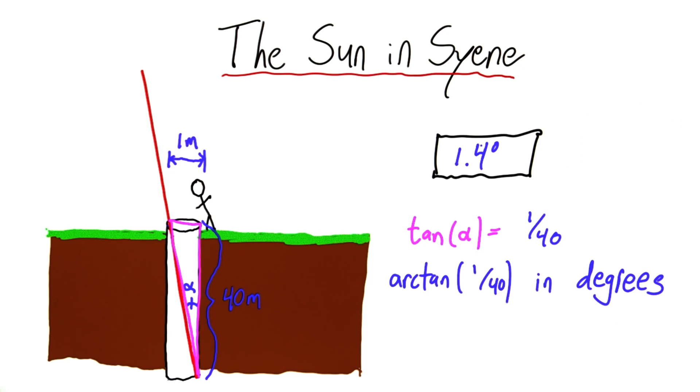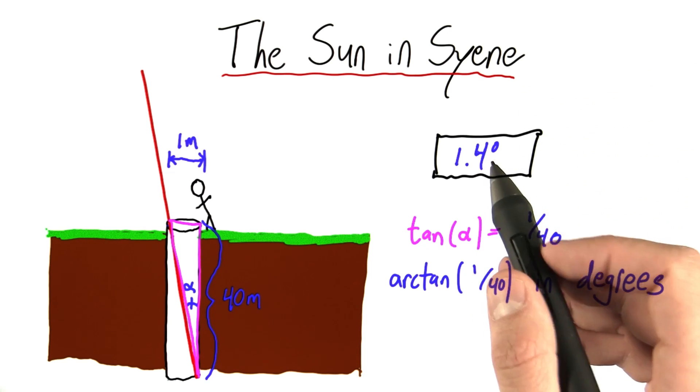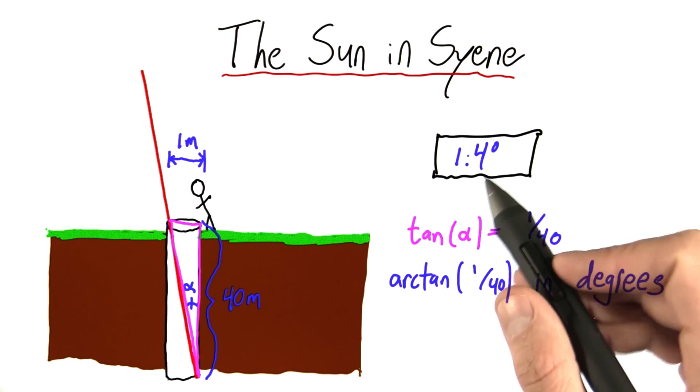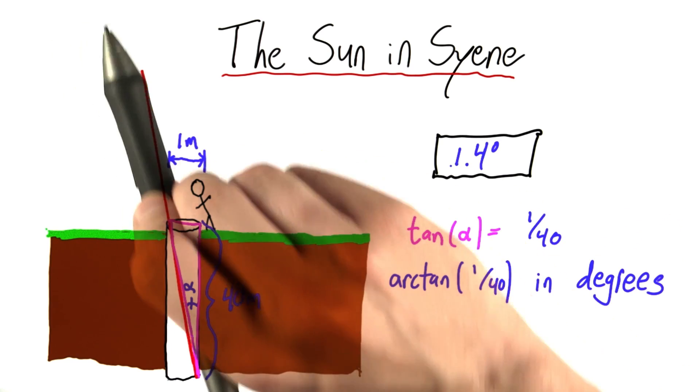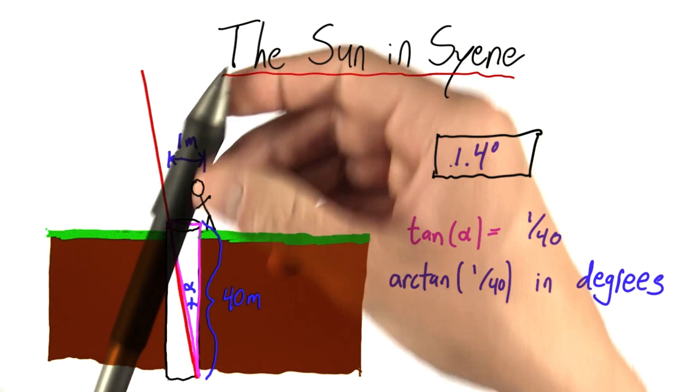So, this points to some error in the measurement. It looks like we could have been off by as much as 1.4 degrees in either direction. The sun's ray could have been coming like this or could have come like that.